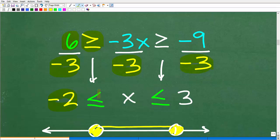-3 ÷ -3. That's x. And now I have my greater than or equal to. That's going to become less than or equal to -9 ÷ -3, positive 3.